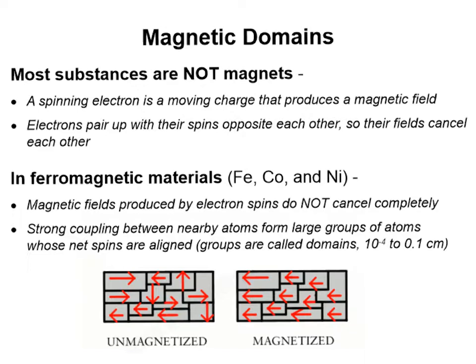There are some substances that we call ferromagnetic materials. Iron, cobalt, and nickel would be some of those. And in these materials, the magnetic fields produced by those electron spins are not completely canceling each other out. In fact, there's a strong coupling between nearby atoms, and it forms large groups of atoms whose net spins are aligned. We call these groups of atoms domains. They can be anywhere from 10 to the negative 4 to 0.1 centimeters in size, and this is what they would look like.